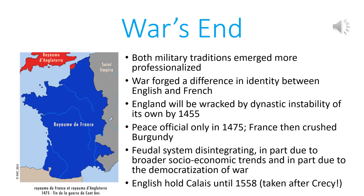The English retained a small spot in France — Calais — holding it all the way until 1558, having acquired it the year after their victory at Crécy. Once England made peace with France, the French moved to crush Burgundy and remove it from existence. Calais is actually part of why Hitler thought the Allies would land there rather than Normandy — thinking it held great significance to the English as their last holding in France. But as with so many other things, Hitler was wrong.